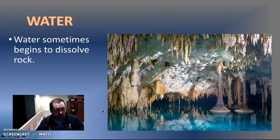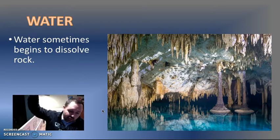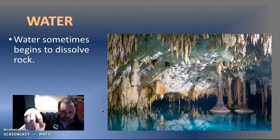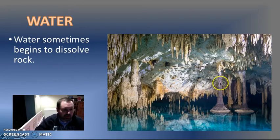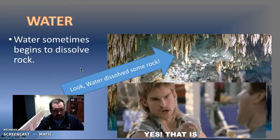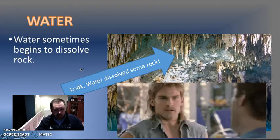One example is water. Water can actually go through the ground because the ground is permeable, and so are many kinds of rocks. The water goes through the ground and starts to dissolve things like calcium. When it dissolves things, it builds up on the underside of caves and things like that. So water sometimes dissolves rock — water dissolves some of this rock, and yes, that is awesome.